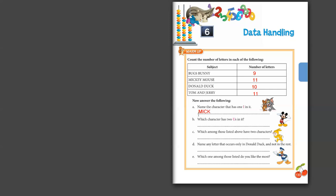So the first answer is Mickey Mouse — the character with 1 I in its name. The next question asks which character has 2 U's. Bugs Bunny has 2 U's, Mickey Mouse has only 1, Donald Duck has 1, and Tom and Jerry has none. So the answer is Bugs Bunny.